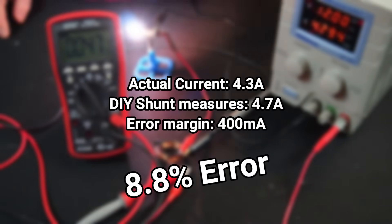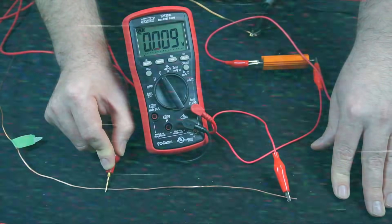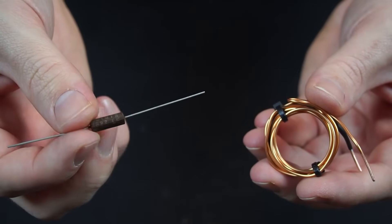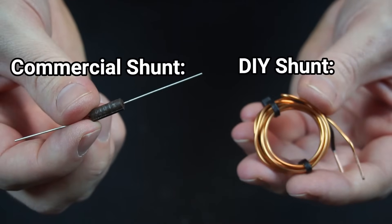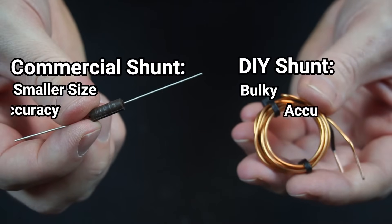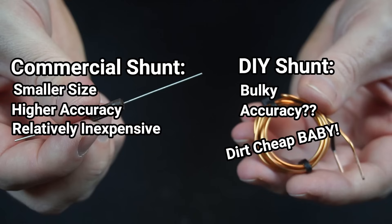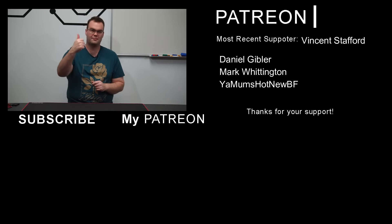That works out to be an error margin of 8.8 percent. Considering that we didn't use any special or expensive equipment to make our DIY shunt, I think that is pretty reasonable. However, if we take into account that commercial shunts are more compact, offer a higher degree of precision, and in most cases are relatively cheap, I think I'll stick to buying my shunts. So if you found this video useful, please give it a like. It would be much appreciated. It helps out massively.